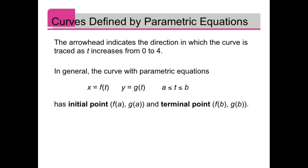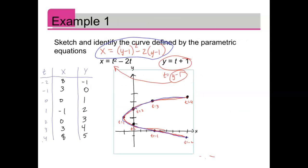When we talk about a parametric curve with parametric equations defined between t equals a and b, we say it has initial point f(a), g(a), and terminal point f(b), g(b). So the one we just sketched has an initial point and a terminal point.